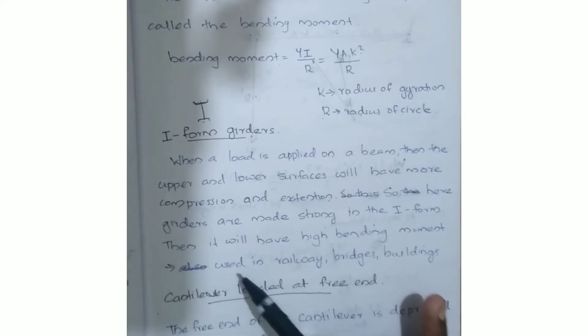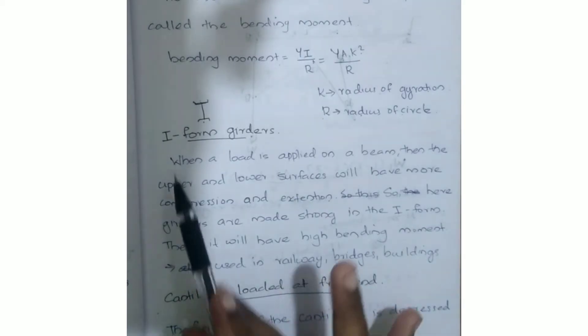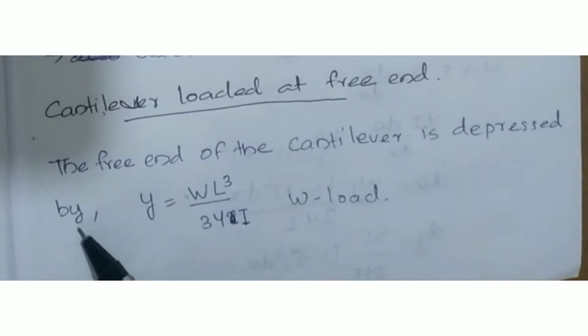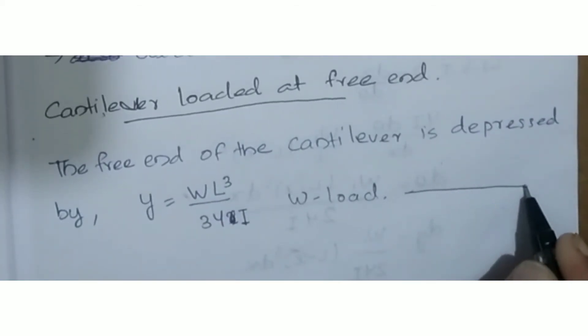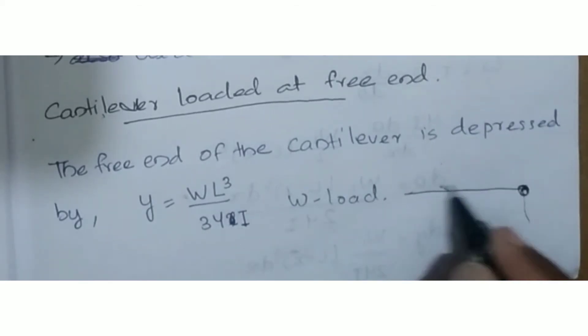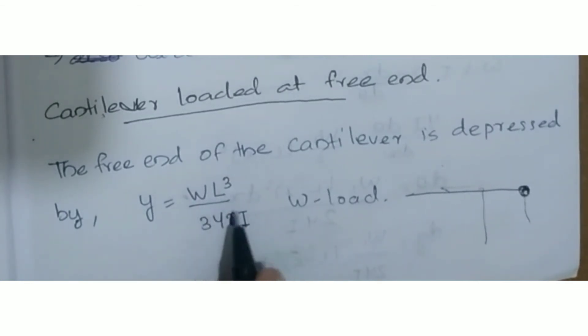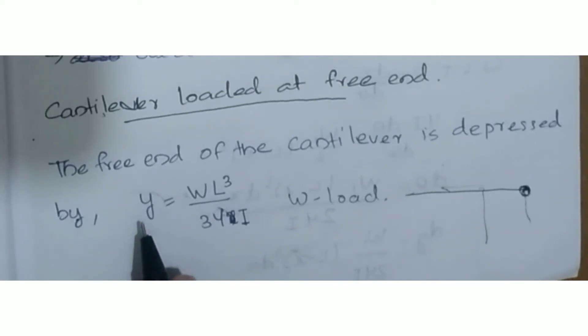I-form girders are used in railway bridges and buildings. When a cantilever is loaded, it has a free end. The free end of the cantilever is depressed by the load. The depression Y is equal to wl cubed divided by 3 times YI, where YI is Young's modulus times second moment of area.